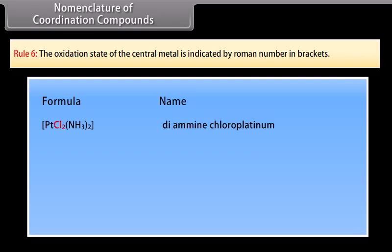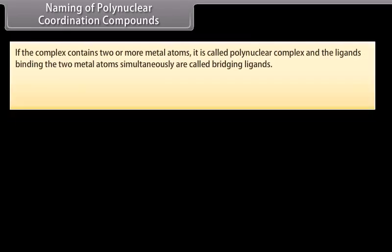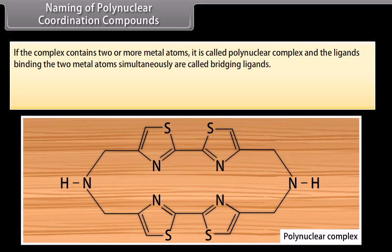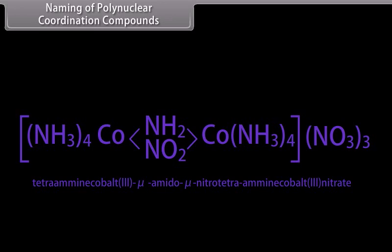Rule 6: The oxidation state of the central metal is indicated by a Roman numeral in brackets. For polynuclear coordination compounds containing two or more metal atoms, the bridging ligands binding two metal atoms simultaneously are named with the prefix 'mu' (μ), separated from the rest of the complex by hyphens. For example, a complex is named tetraamine-cobalt(3)-μ-amido-μ-nitro-tetraamine-cobalt(3)-nitrate.